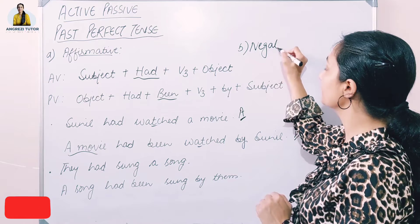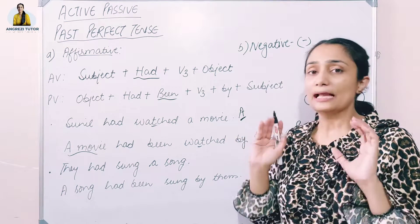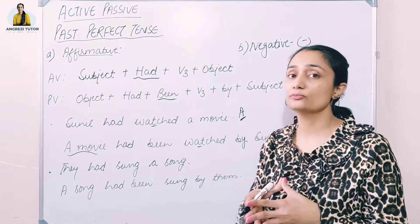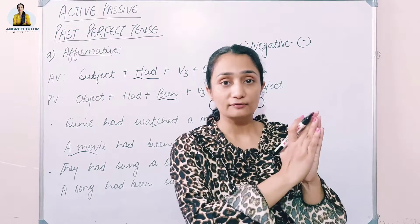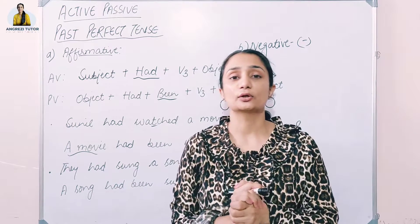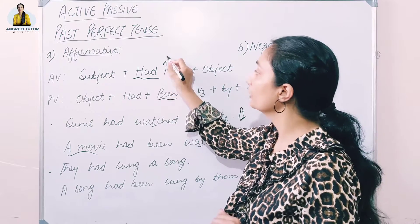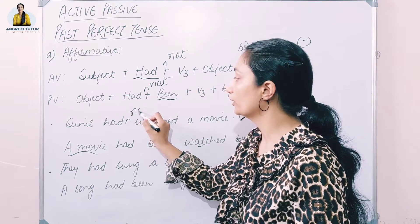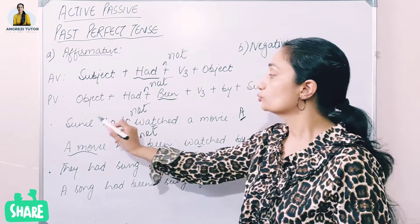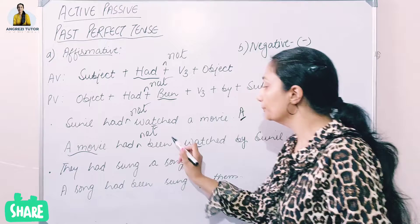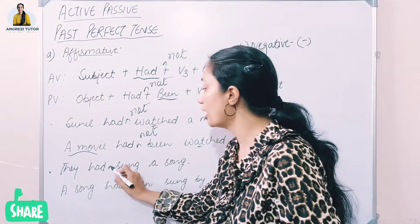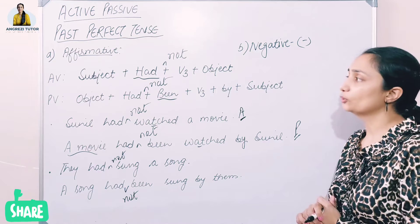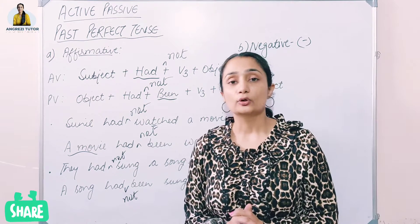Now for negative sentences, we simply add 'not' after the helping verb. The rest of the structure remains the same — helping verb, not, been, verb third form. For example: 'Sunil had not watched a movie' becomes 'A movie had not been watched by Sunil.' And 'They had not sung a song' becomes 'A song had not been sung by them.'